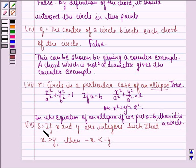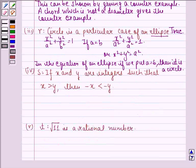Now, let us see the solution to fourth part. The fourth statement is S, that is, if x and y are integers such that x is greater than y, then -x is less than -y. Our answer would be that this is a true statement, and this we can get directly by rule of inequality.